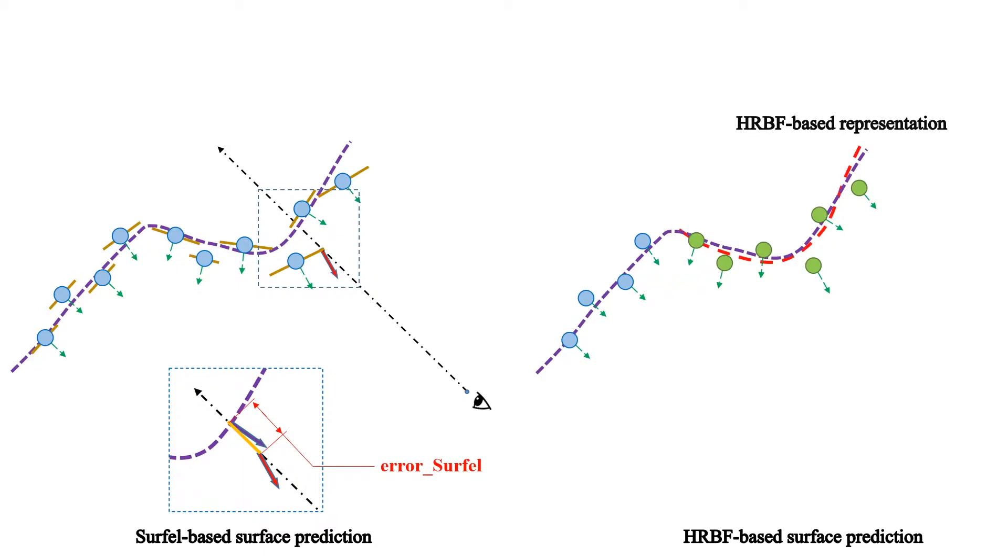Then, the predicted surface point is obtained by intersecting the viewing ray with the HRBF surface. With the robust local reconstruction of a continuous surface, the error of the predicted surface is dramatically reduced compared to the surfel-based surface prediction method.